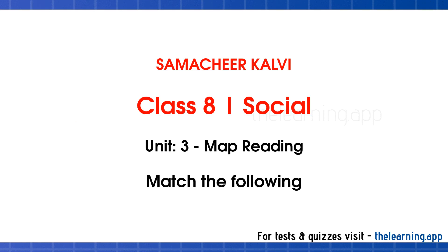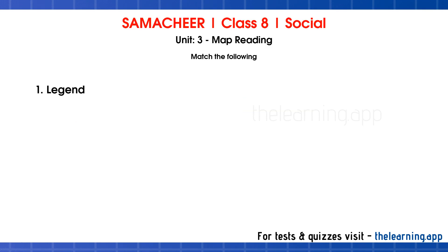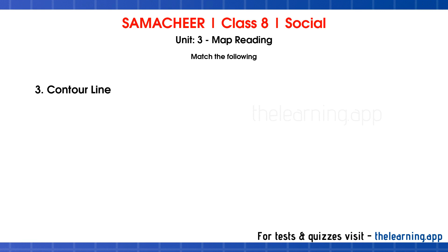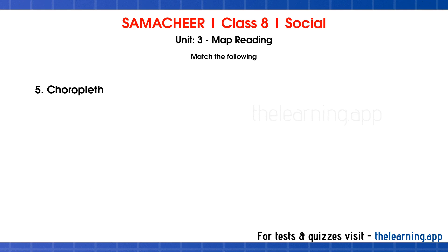Match the following. Question 1: Legend. Correct answer is brown color. Question 2: North East. Correct answer is thematic map. Question 3: Contour line. Correct answer is taxation. Question 4: Cadastral map. Correct answer is 45. Question 5: Coropleth. Correct answer is key of a map.